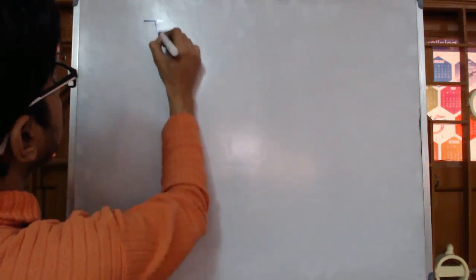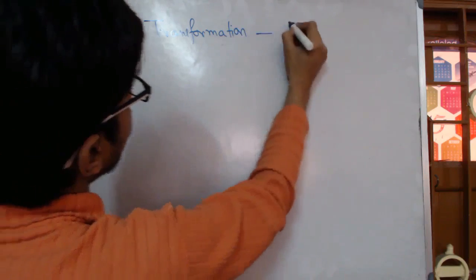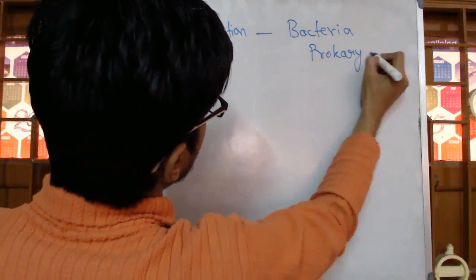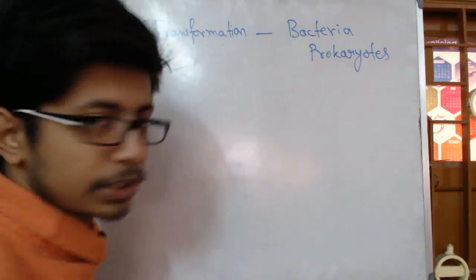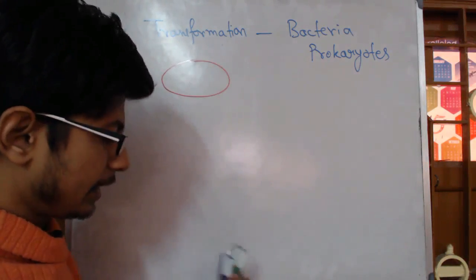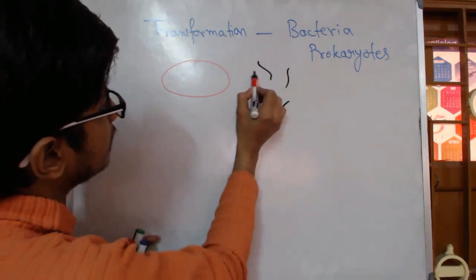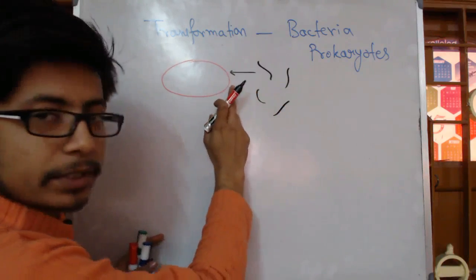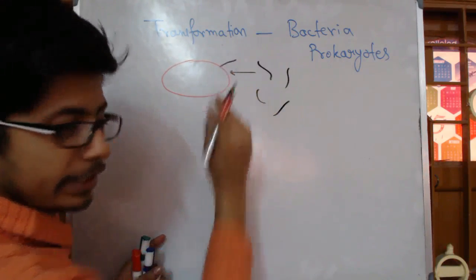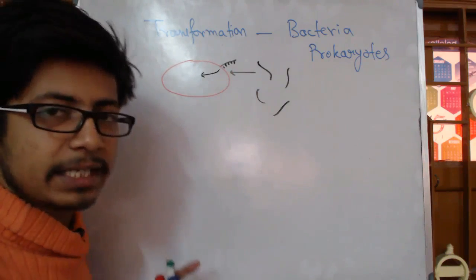Transformation, as I told you, this term is generally applied for bacteria or prokaryotes. You know the process of transformation: there is a bacterial cell, and there is a genetic element, say the DNA fragments. Now that DNA will bind to a specific receptor that is present on the surface of the bacterial cell, and then the DNA will be made single stranded. One strand will be degraded, then it is uptaken inside the bacterial cell. So this is the idea of transformation.